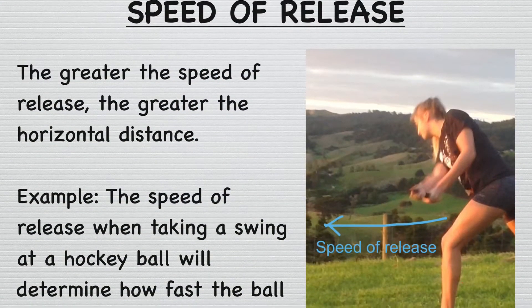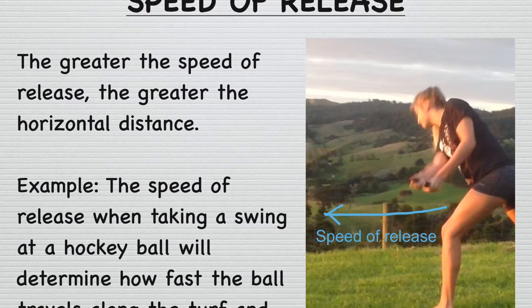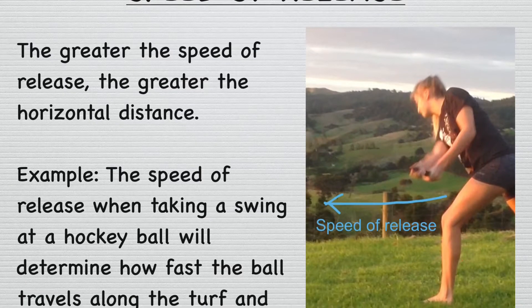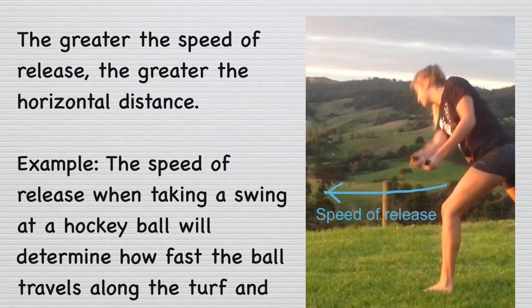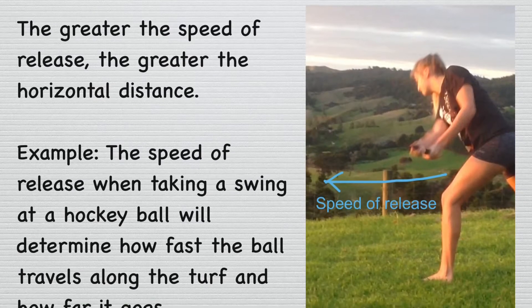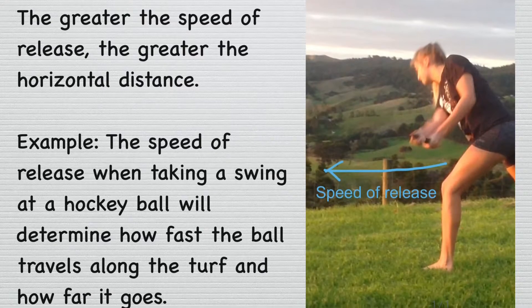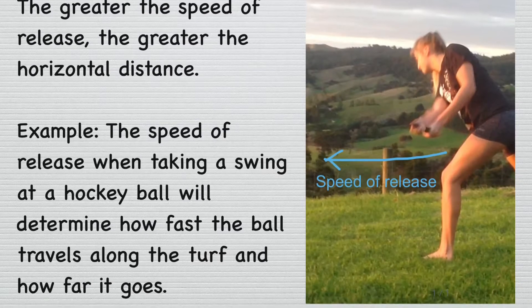Speed of release. The greater the speed of release, the greater the horizontal distance. For example, the speed of release when taking a swing at a hockey ball will determine how fast the ball travels along the turf and how far it goes.